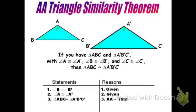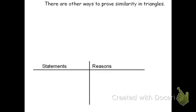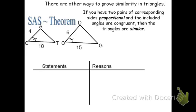AA similarity theorem is going to be the easiest of the three methods — it requires only two pairs of congruent corresponding angles. Now let's turn our attention to SAS similarity theorem. For SAS similarity theorem, you need two pairs of corresponding sides that are proportional, and you need the included angles to be congruent.